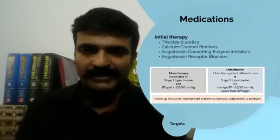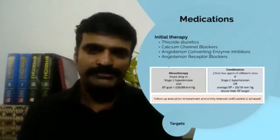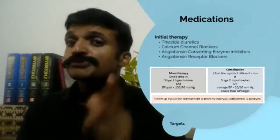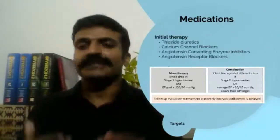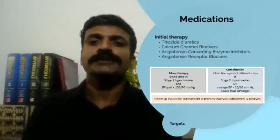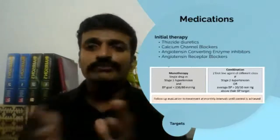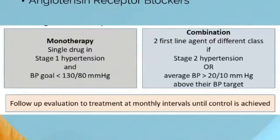In elderly patients, calcium channel blockers are extremely safe drugs. ACE inhibitors and ARBs are preferred in patients with associated kidney disease or diabetes; however, once creatinine is more than 2, monitor potassium levels since ACE inhibitors and ARBs increase potassium. In diabetics, ACE inhibitors or ARBs are a good choice; in elderly patients, a calcium channel blocker is a good choice. For Stage 1 hypertension with ASCVD risk greater than 10%, start with one drug.